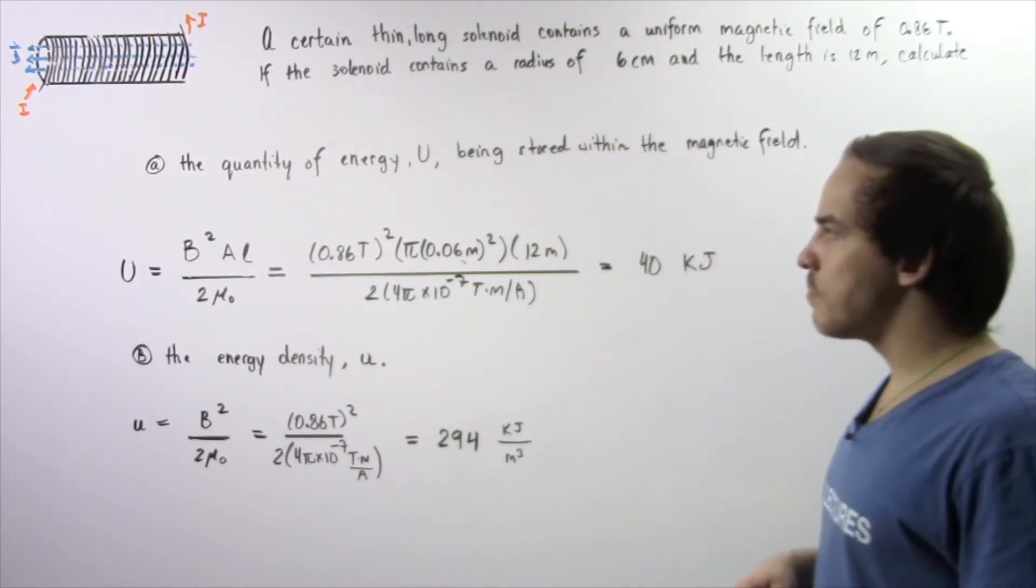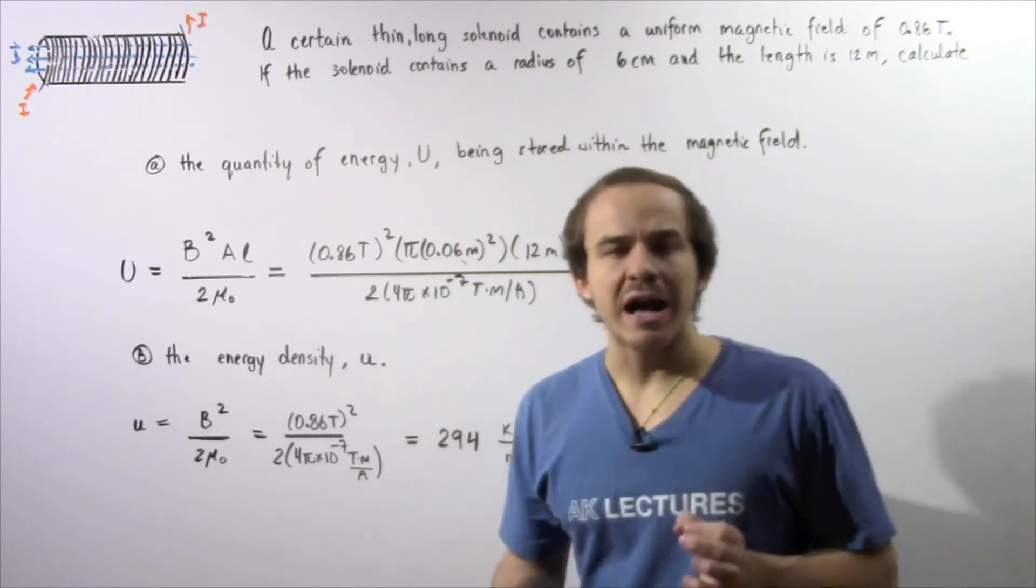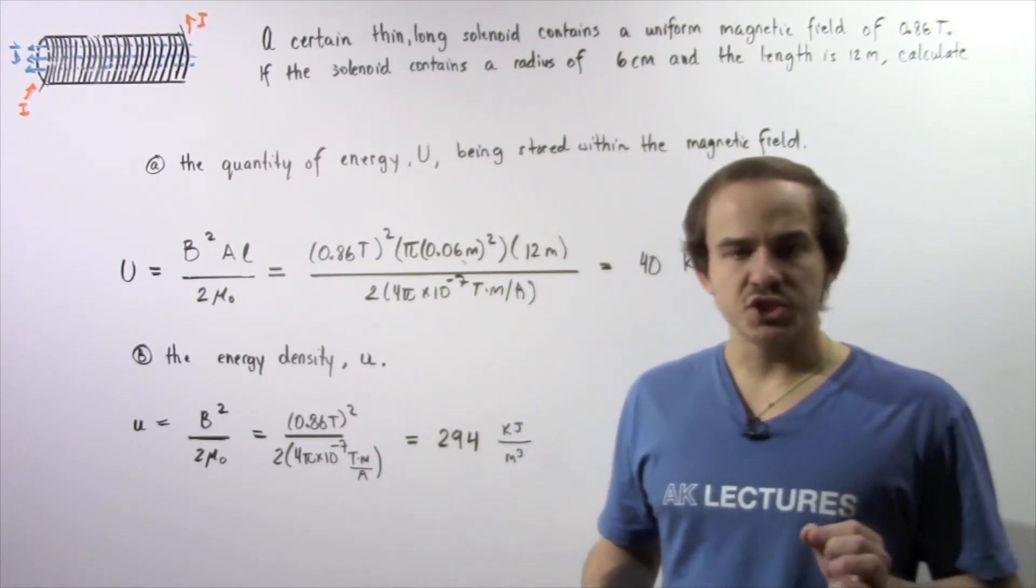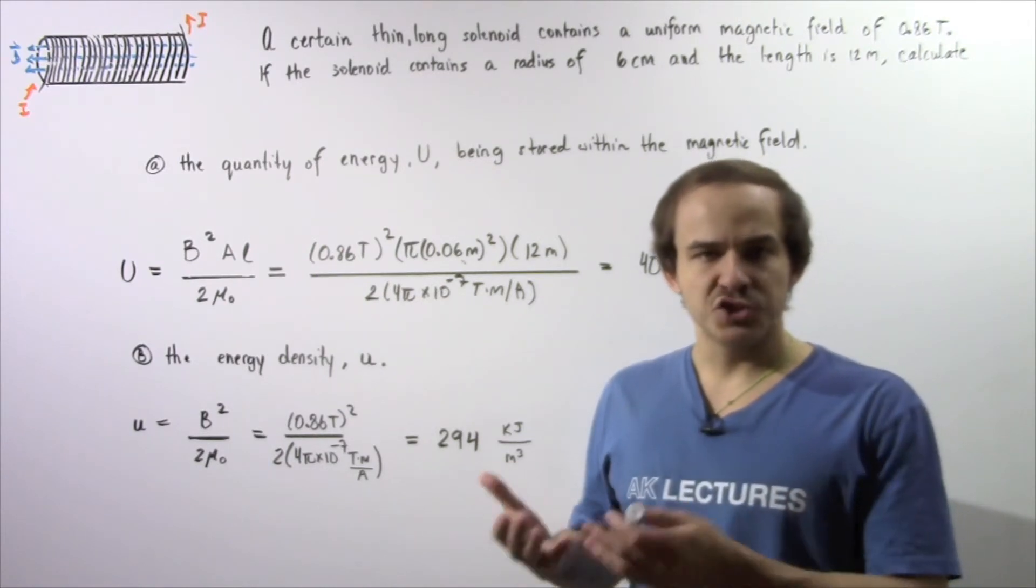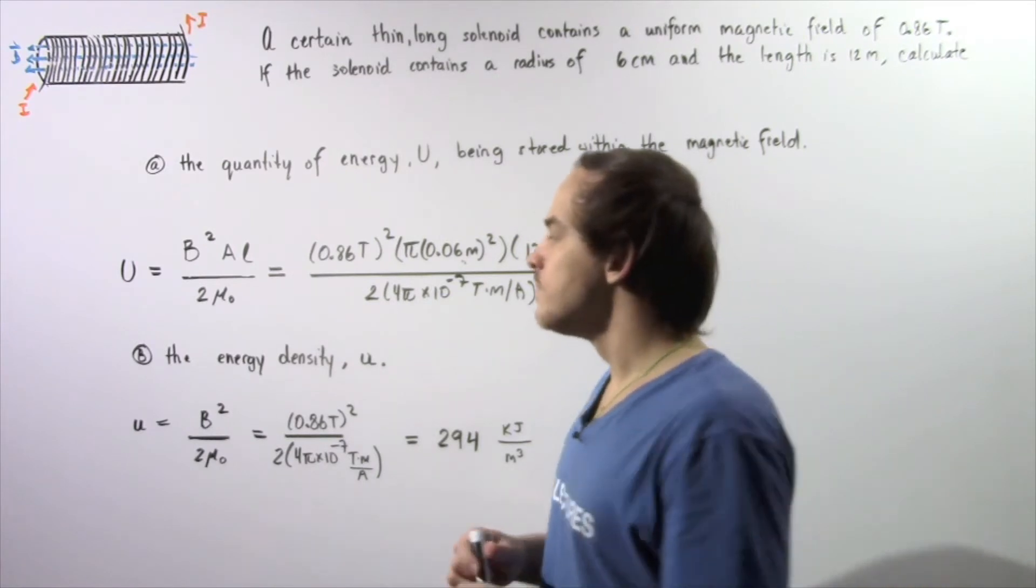Let's begin with part A. In the previous lecture we were able to derive the equation that gives us the quantity of potential energy stored within the magnetic field inside a solenoid.